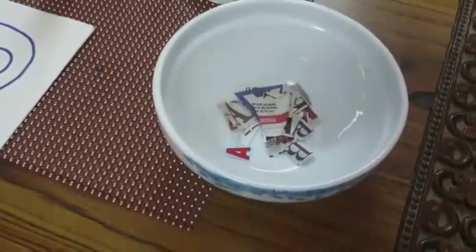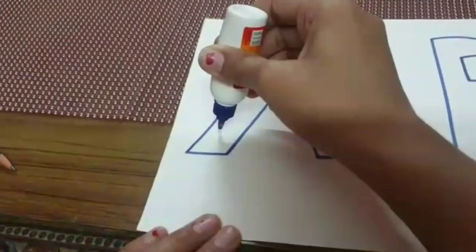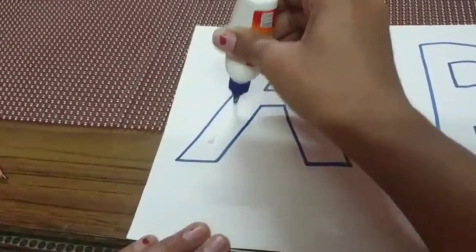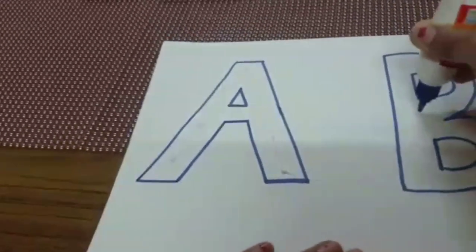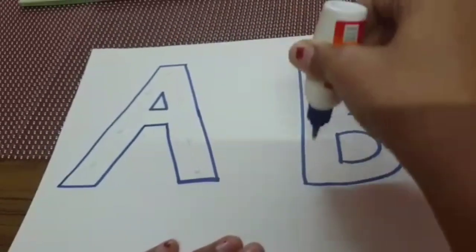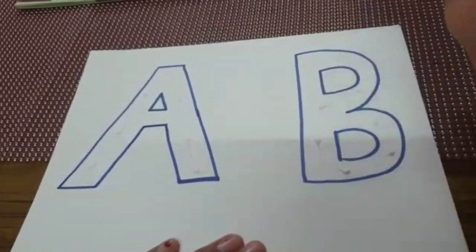Now take this worksheet and apply some fevicol on it. After applying the fevicol, pick up a letter from the bowl.